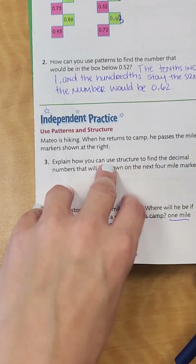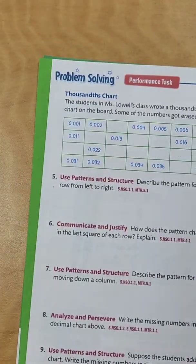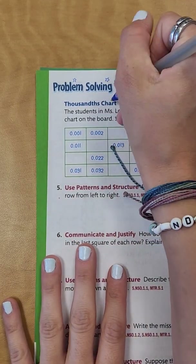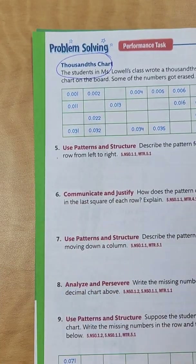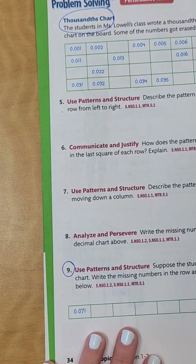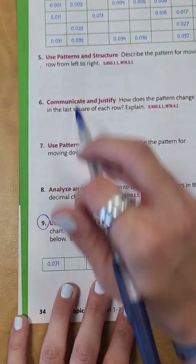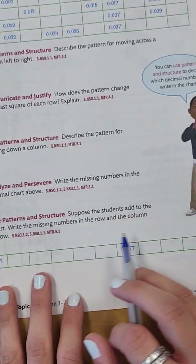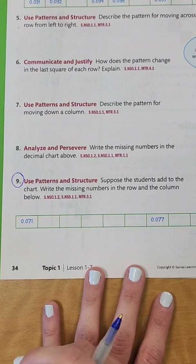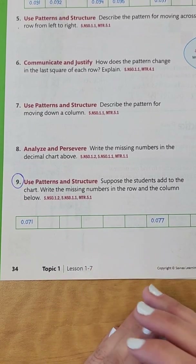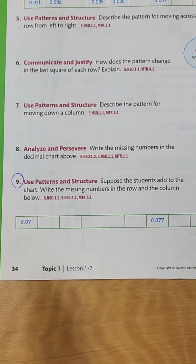Let's flip to our last page. I want you to do this thousandths chart on your own — circle the thousandths chart. I also want you to do number nine at the bottom: the Use Patterns and Structures section at the bottom of page 34. If you have any questions, please feel free to ask. Watch back the video if you don't understand, and if you still don't understand, ask those questions at the end. Have fun and good luck, guys.